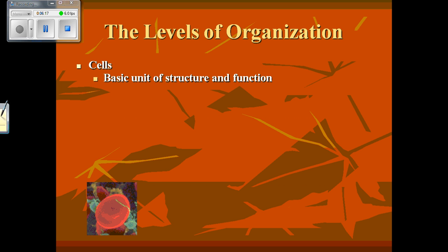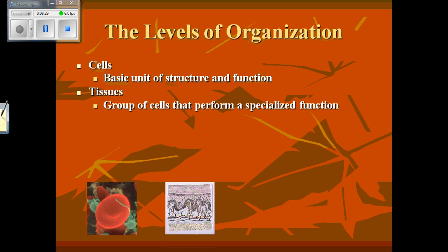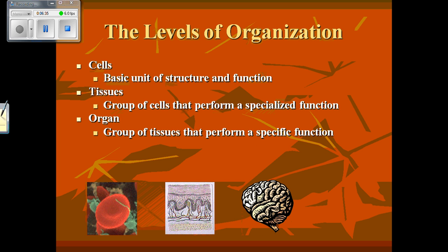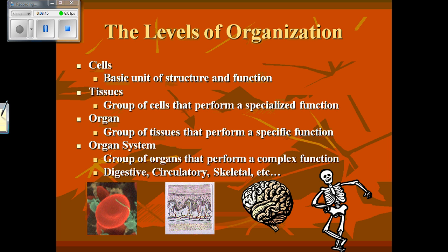The last thing we're going to talk about is levels of organization. Cells are the basic unit of structure and function — the smallest part of a living thing. When we take a group of cells and put them together to perform a job, that's called a tissue. When you take groups of tissues together performing a specific function, that's an organ. Then an organ system is a group of organs that perform a complex function — your digestive, circulatory, skeletal, and respiratory systems are all organ systems.